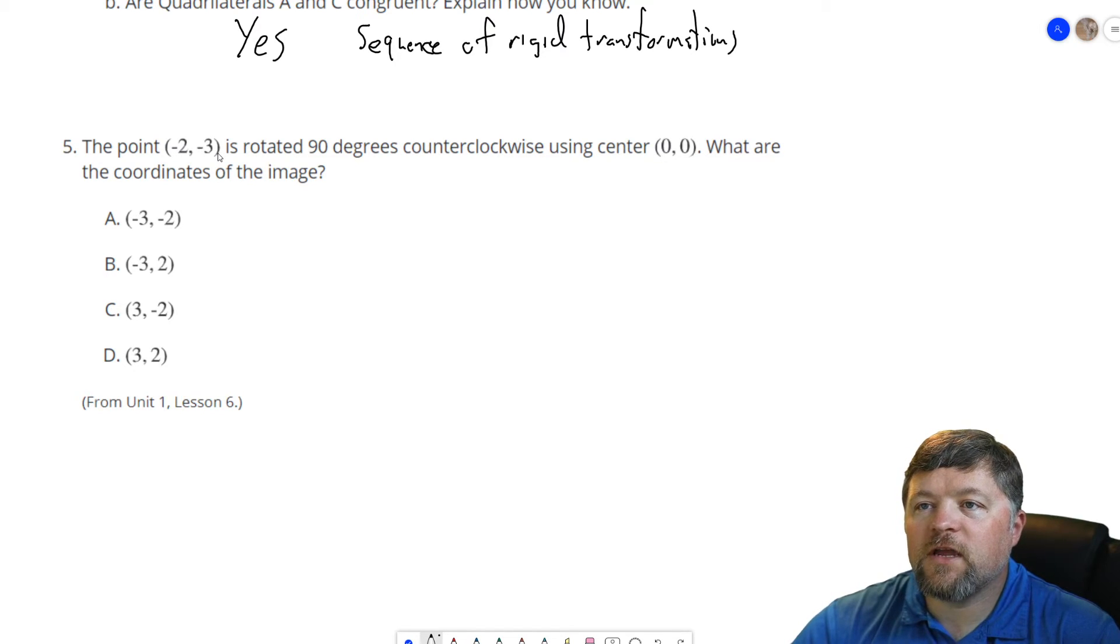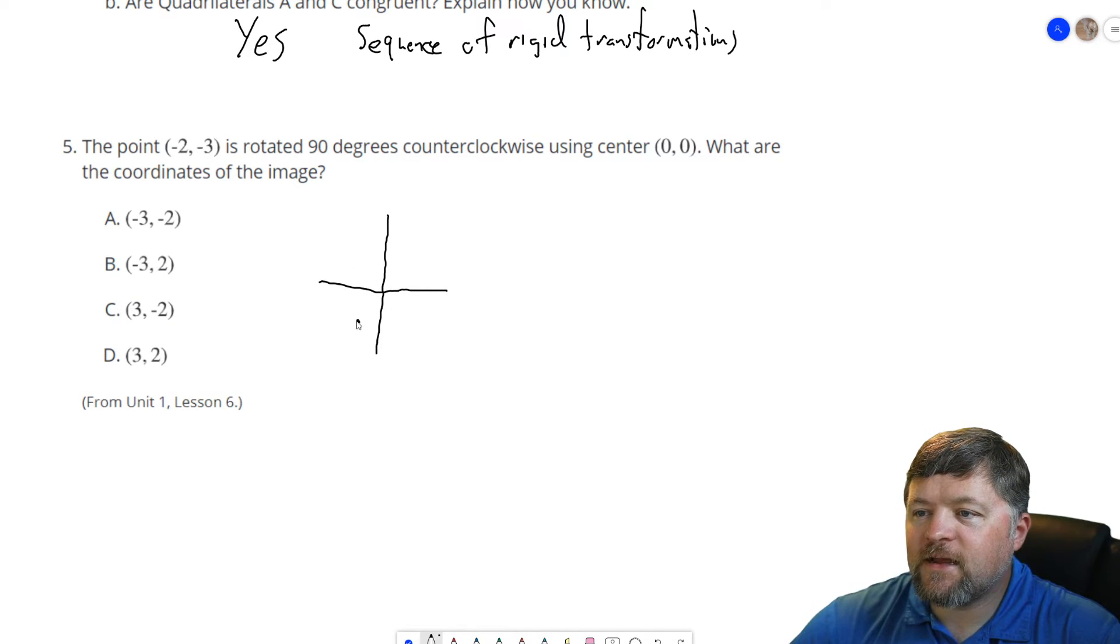So 2, 3 is going to have to become 3, 2. All of those are 3, 2. Now let's think about what's going to happen to our sign. For the point negative 2, negative 3, that's down here. If we rotate 90 degrees counterclockwise, that's this direction. So 90 degrees counterclockwise is going to put us over here.